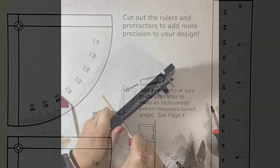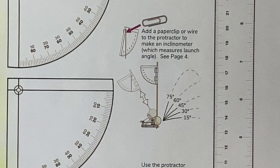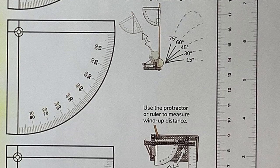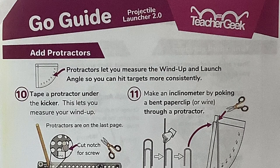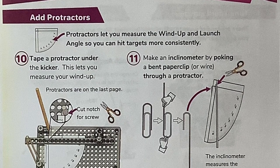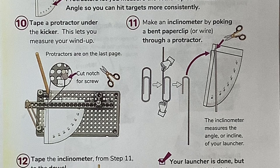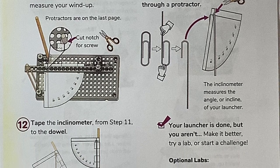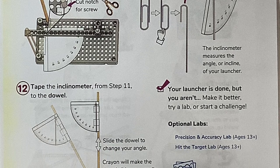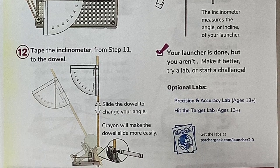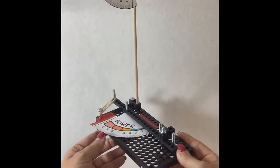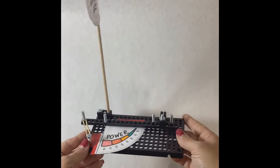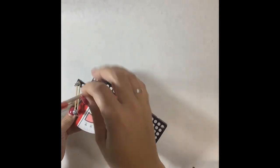Once your dowel rod is in place, you can use the protractor and the inclinator to adjust the angle at which your projectile launches. The final set of directions will tell you all the details about how to attach those to your projectile launcher. You can add your own personal touches to the final pieces of your projectile launcher and you're now ready to test its strength and its accuracy.